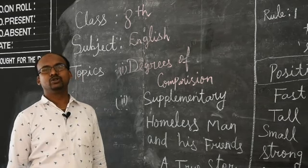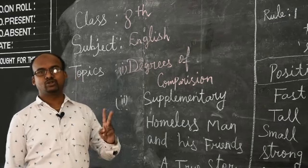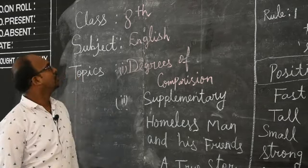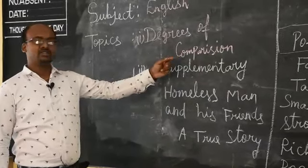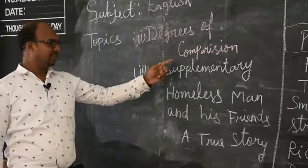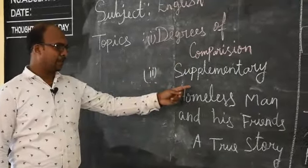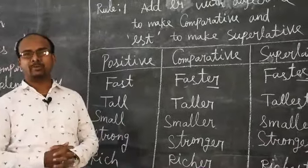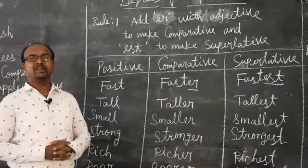Welcome back, dear students, for today's English class. This is your English teacher. Today we are going to discuss two topics. First one, degrees of comparison — we already started last class, and today we are going to complete that. And then next, the supplementary story: 'Homeless Man and His Friends,' a true story. So first, let us move on to degrees of comparison.